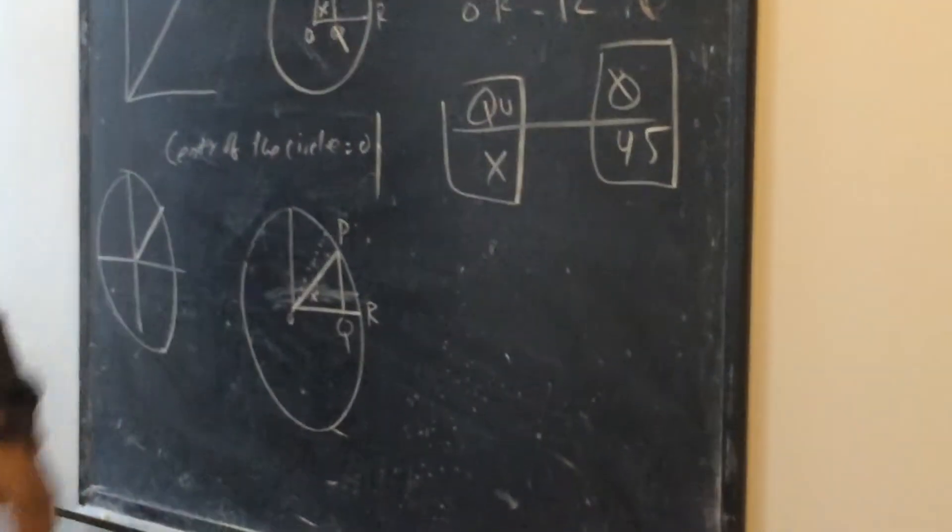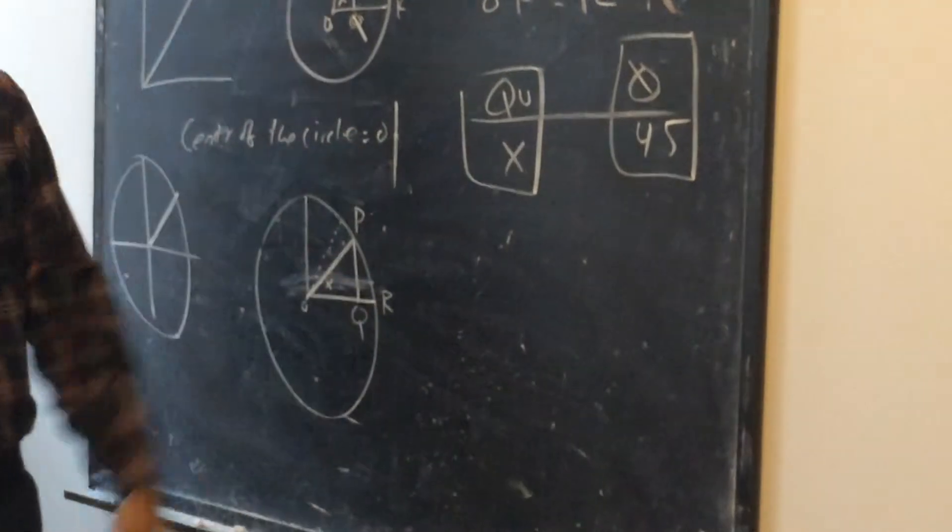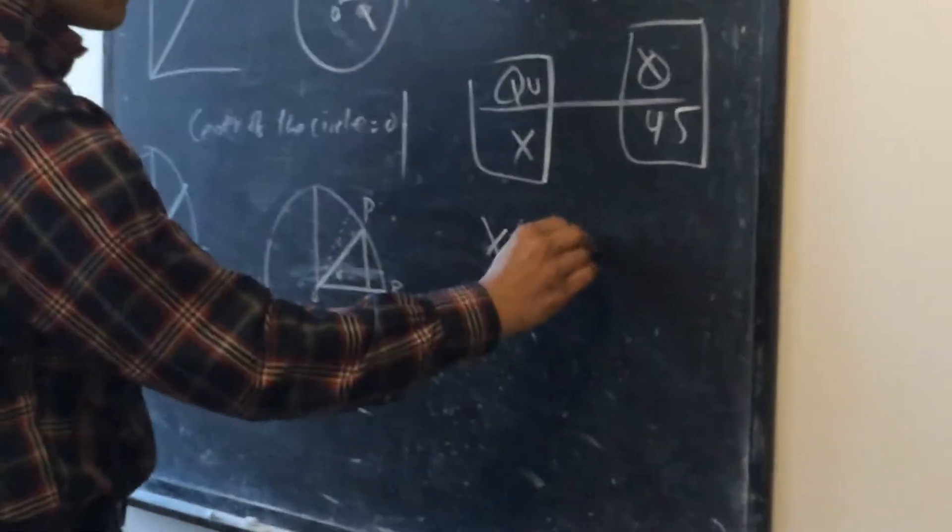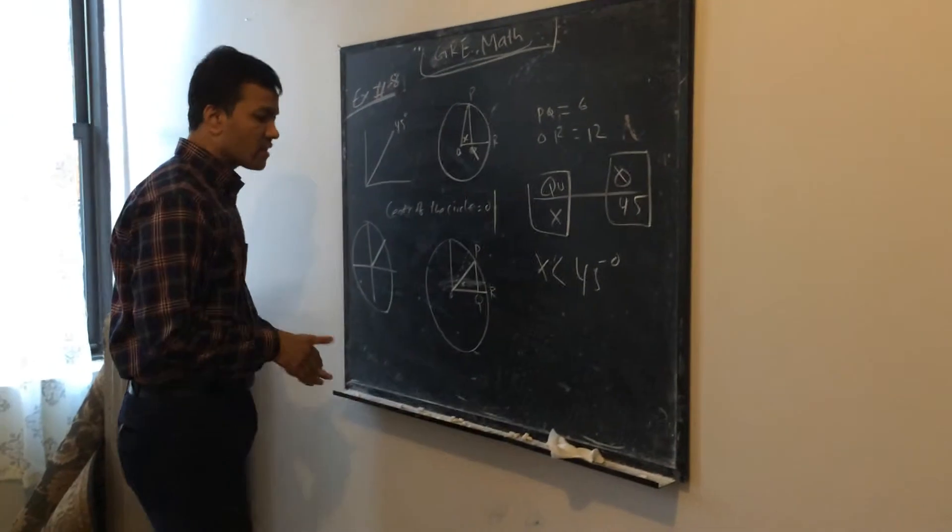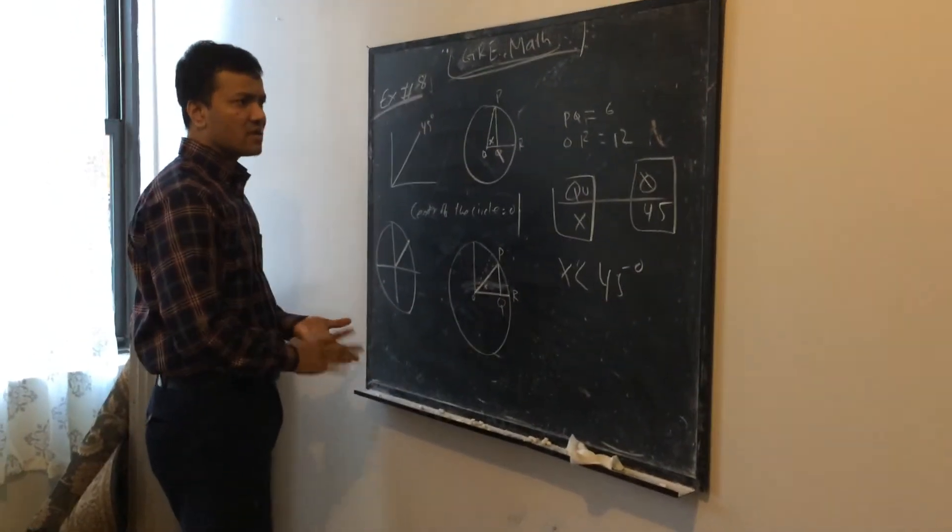So X looks like less than 45 degrees. So we know that X is less than 45 degrees. Okay, so this is some kind of check-me-out I really want you to do. Alright, that's it.